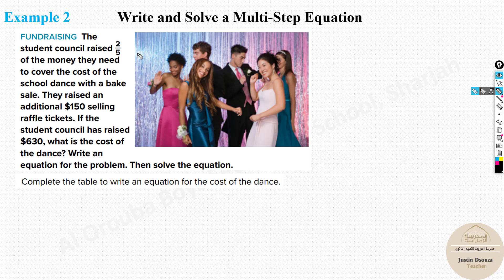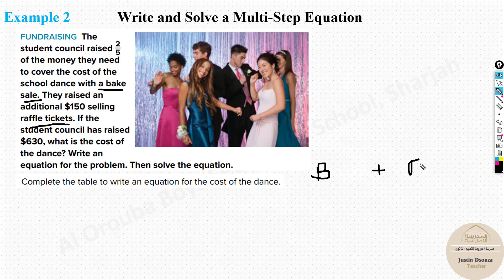They raised two-fifths of the dance money from the bake sale, and raffle tickets brought in $150, for a total of $630. So: bake sale + raffle tickets = $630. They haven't told us the exact bake sale amount, but the raffle tickets were $150 and the total is $630.